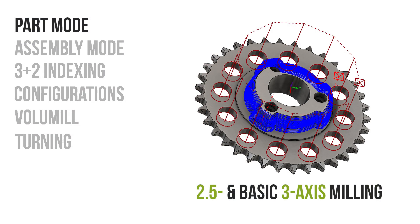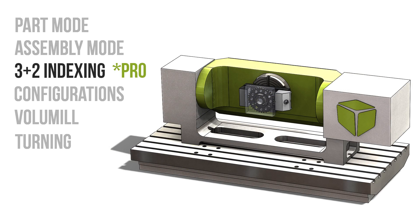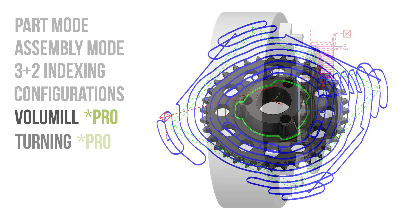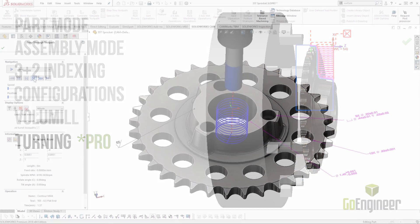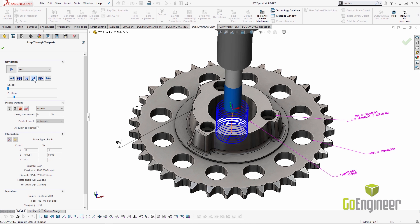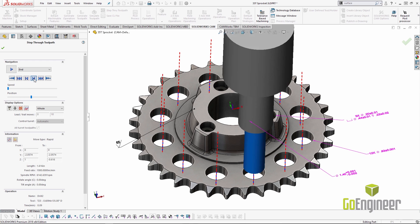SOLIDWORKS CAM comes in two tiers. CAM Standard is available for all SOLIDWORKS users current on maintenance and allows you to program two-and-a-half axis and basic three-axis features on parts. CAM Professional opens the door to assembly programming, 3+2 and tombstone machining configurations, high-speed machining through volume mill, and also turning on a lathe. Both CAM Standard and Professional will leverage model-based PMI in the CAD file, and SOLIDWORKS CAM adjusts machining strategies based on a dimension's tolerance window and surface finish callouts.